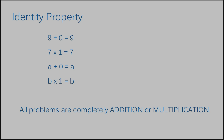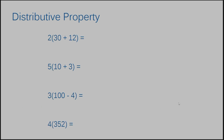Now let's jump into the last property — the distributive property. For the distributive property, you're usually going to see a set of parentheses with two separate numbers on the inside. When you hear the word distribute, you may think of passing something out. If a teacher says to distribute these papers to the students, they mean give everybody one. Let's pretend this two is the teacher, and the teacher wants to distribute to the students, which are the numbers inside.